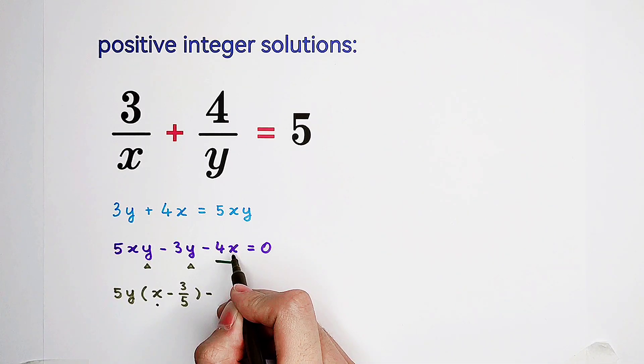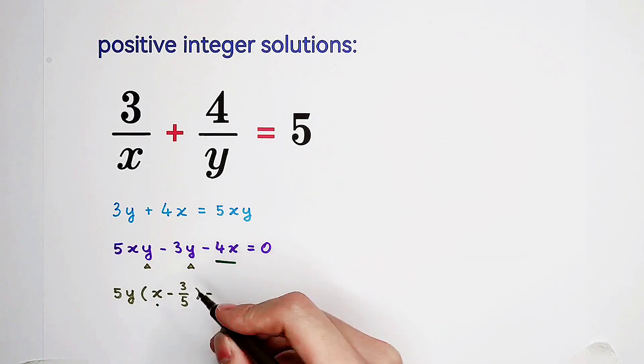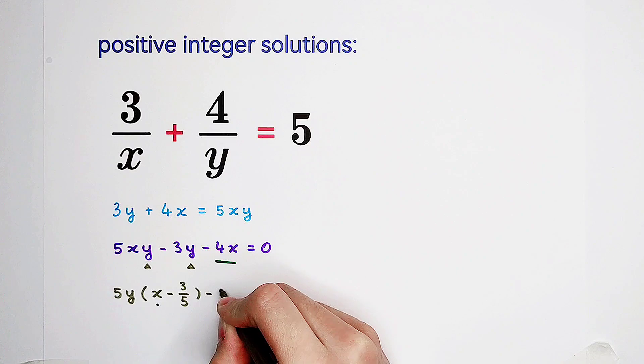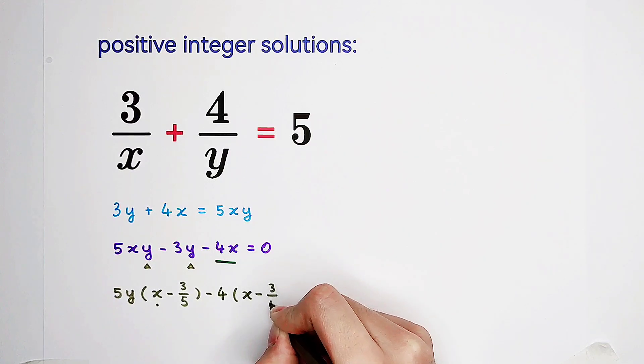So we hope that there will also be x minus 3 over 5. Because this is only a term about x. So we hope that we can take out x minus 3 over 5 here. However, we cannot do that so simply. We can firstly take out minus 4. Then, we pretend to write a 3 over 5 here. However, we cannot do that. Of course not.